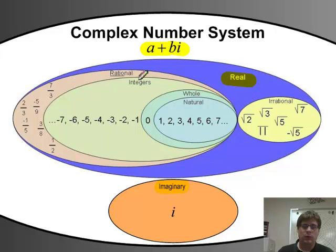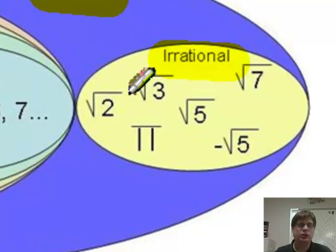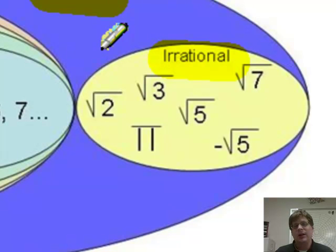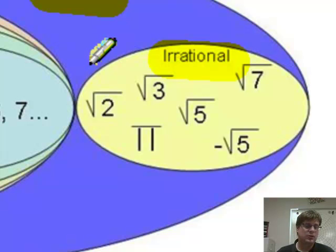Within this real number system, we can divide it into rational numbers and irrational numbers. Irrational numbers are your non-repeating, non-terminating decimal values. For instance, like the square root of 2 or pi. Pi is 3.1415 and it goes on forever and ever. So all these numbers are irrational.